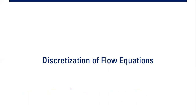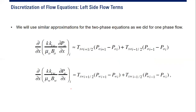Now we talk about discretization of the flow equations. We use similar approximations for two-phase equations as we did for one-phase flow. Previously we learned this for a one-phase system; now we address a two-phase system — oil and water. We have equations for both oil and water, and the differential term ddx is approximated using the finite difference method.